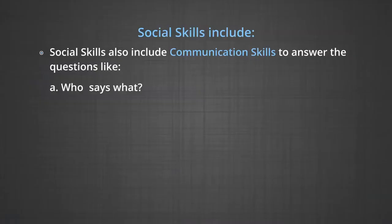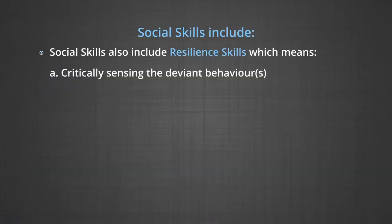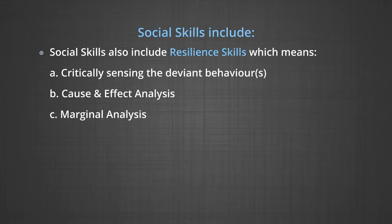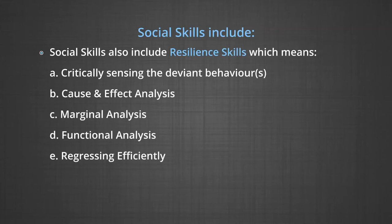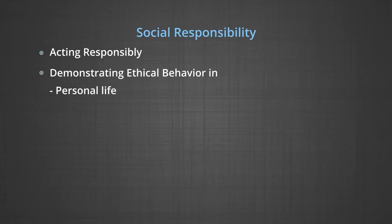Social skills also include communication skills to answer the questions like who says what, to whom, through which channel, and with what effect. It also includes resilience skills, which means critically sensing deviant behaviour, cause and effect analysis, marginal analysis, functional analysis, and regressing efficiently. Social responsibility includes acting responsibly and demonstrating ethical behaviour in personal life, workplace and community.